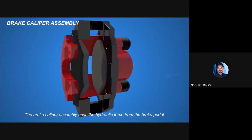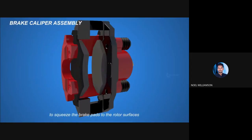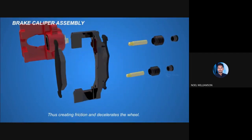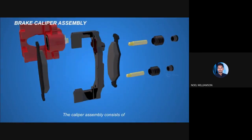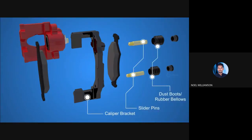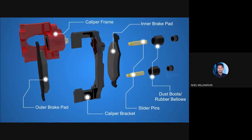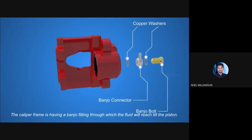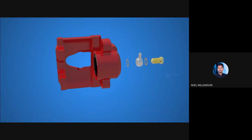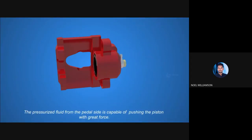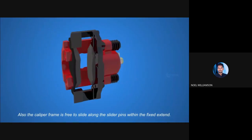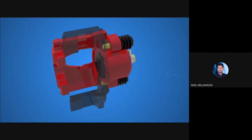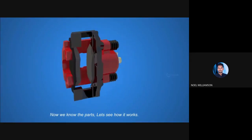The brake caliper assembly uses hydraulic force from the brake pedal to squeeze the brake pads to the rotor surfaces, creating friction and decelerating the wheel. The caliper assembly consists of the caliper bracket, slider pins, dust boots, inner brake pad, outer brake pad, caliper frame, and inside it the piston. The caliper frame has a banjo fitting through which fluid reaches the piston. The pressurized fluid from the pedal side pushes the piston with great force, and the caliper frame is free to slide along the slider pins within a fixed extent.